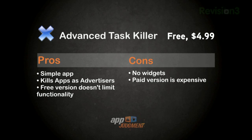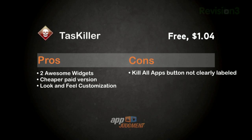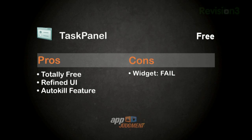So there you have it — three apps that all pretty much do the same thing with a few differences. Advanced Task Killer is a simple app, does what it says, and is easy to use. There's a free version that doesn't limit functionality, but unfortunately no widgets, and the paid version is pricey compared to the others. Task Killer's paid version is cheaper, and it's got two great widgets and cool customization options, though the kill all apps button isn't clearly labeled. Task Panel is the only totally free app of the bunch, and the most refined in terms of UI. It also has the great auto-kill list feature, but its widget fails — it takes up too much space without providing enough functionality to make it worthwhile.